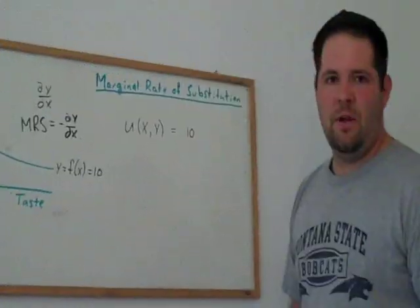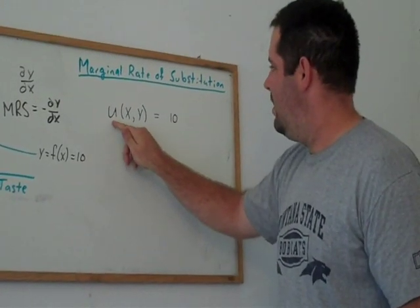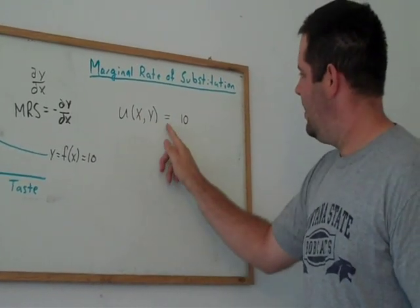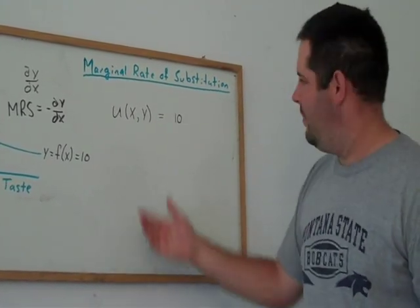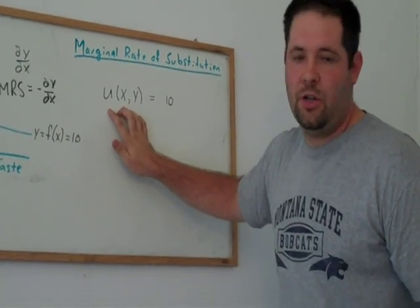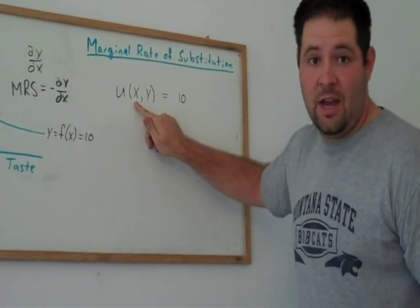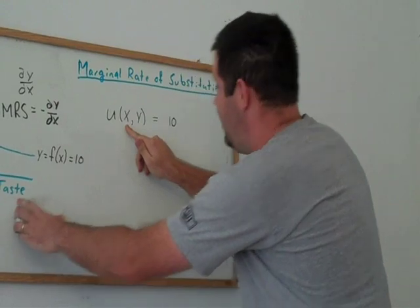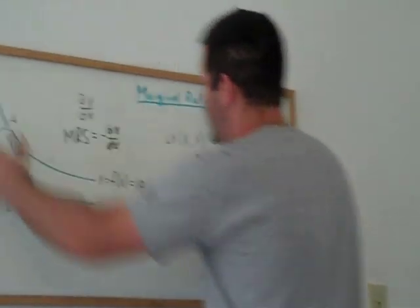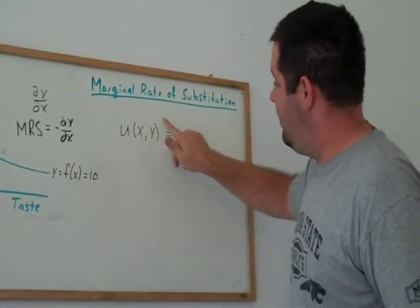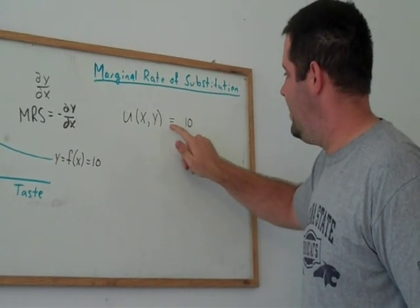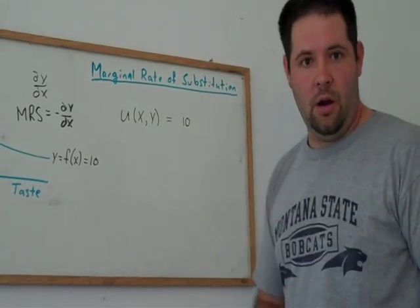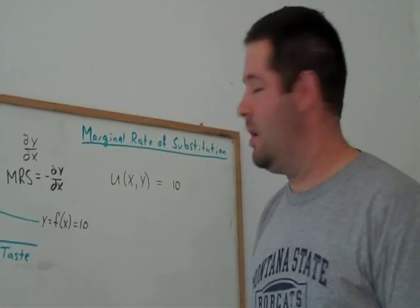An indifference curve is defined as the x's and y's that give you the same utility. If we think of this as a multivariable function, utility is a function of x, it's a function of how much taste you have, it's a function of y, how much health you have. And the x's and y's that give us 10 are all on the same indifference curve.